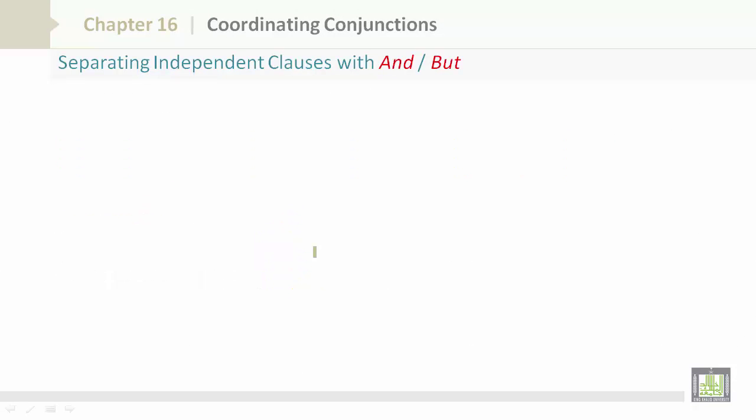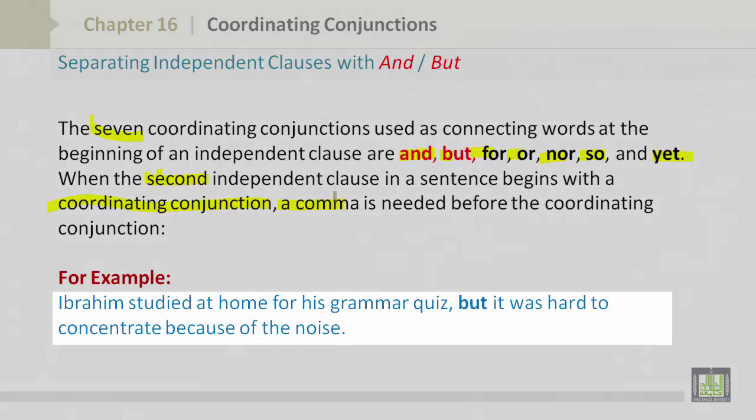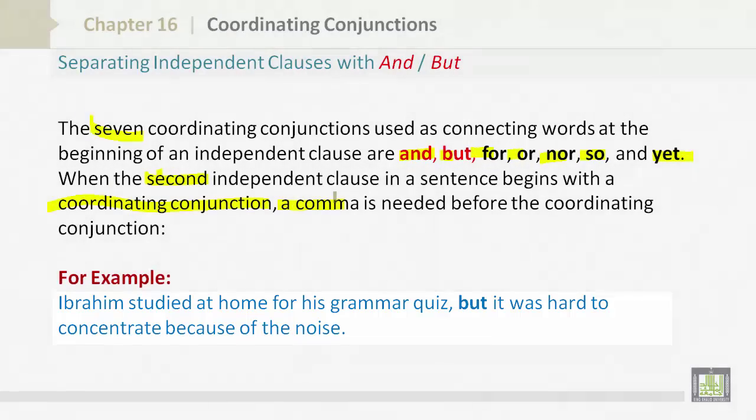Separating independent clauses with and or but. The seven coordinating conjunctions used as connecting words at the beginning of an independent clause are and, but, for, or, nor, so, and yet. When the second independent clause in a sentence begins with a coordinating conjunction, a comma is needed before the coordinating conjunction. For example: Ibrahim studied at home for his grammar quiz, but it was hard to concentrate because of the noise.